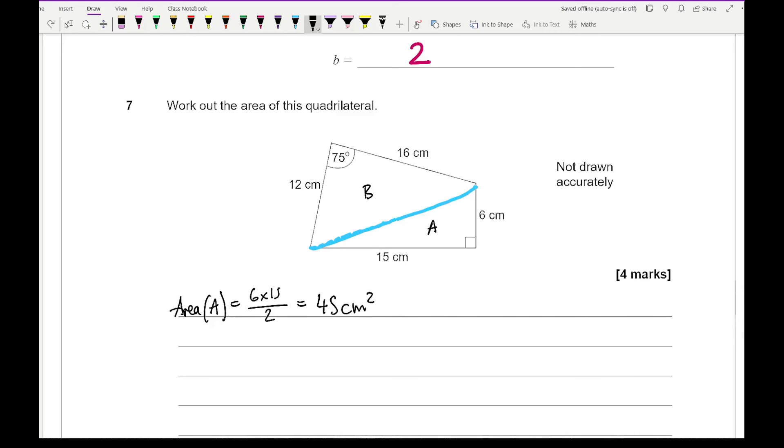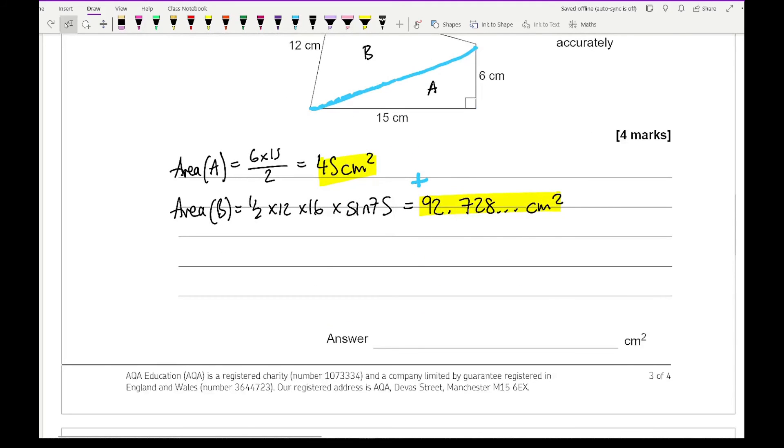And then working out the area of B. Well this one I don't know the perpendicular height so I need to use a half AB sine C. So it's a half times 12 times 16 times sine of 75. Now if I type that all into my calculator I get an answer of 92.728 blah blah blah centimetre squared. And then all I then need to do is just simply add these two answers together. And if I add those two numbers together what do I get? Well I get 137.